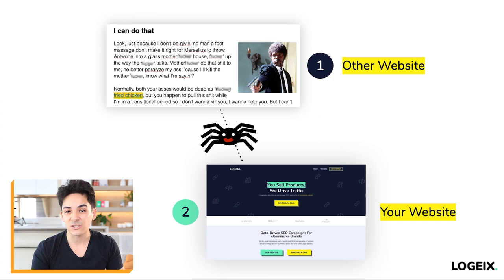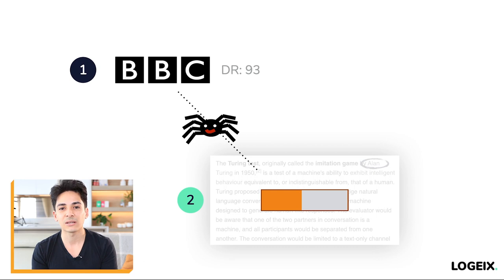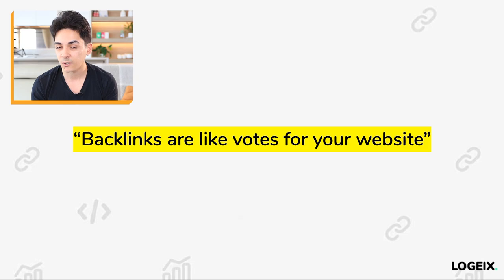Going back to what we talked previously, you have your spider that's going to crawl through these links and find your pages. On top of that, it's also going to pass page rank, which is an internal metric that Google uses. We don't know exactly how that works or how it's measured, but we do know that it passes via links, and we have other tools that attempt to replicate that. All you need to understand is that backlinks pass page rank and a lot of benefit — or in a much simpler way: backlinks are like votes for your website.